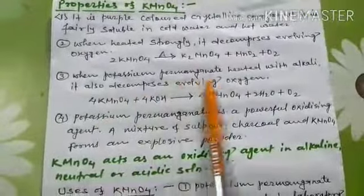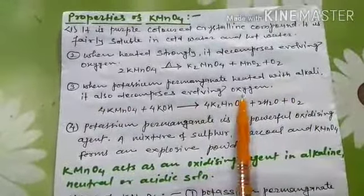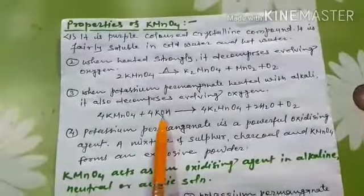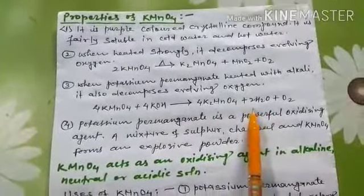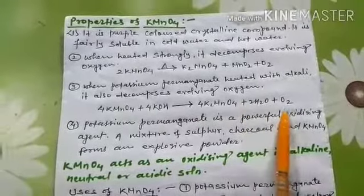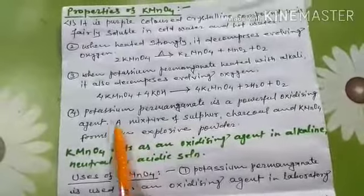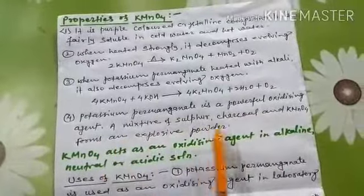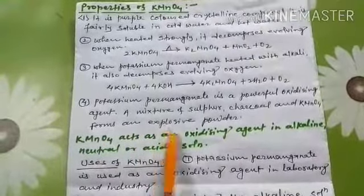When potassium permanganate is heated with alkali, it also decomposes, evolving oxygen. Potassium permanganate heated with alkali gives potassium manganate, water, and oxygen gas. Potassium permanganate is a powerful oxidizing agent. A mixture of sulfur, charcoal, and potassium permanganate forms an explosive powder.